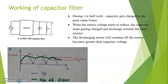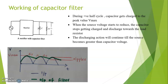The capacitor will slowly start to discharge through the resistor. So the charging path is from the rectifier to the capacitor, and the discharging path is from the capacitor through the resistor. The capacitor will discharge until the input becomes equal to or greater than the capacitor voltage. Then the capacitor will charge, discharge, and the cycle will continue as shown in the figure.